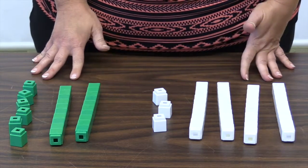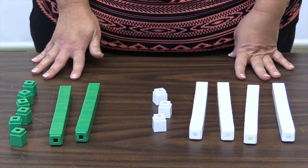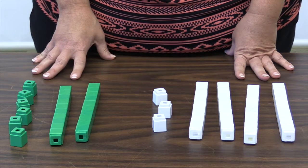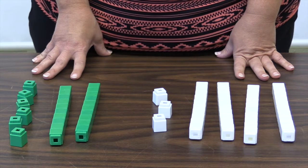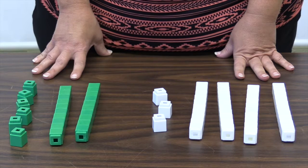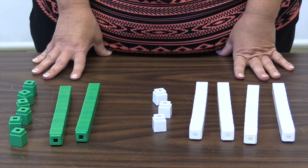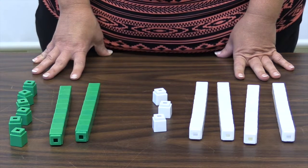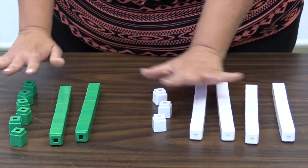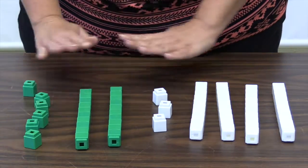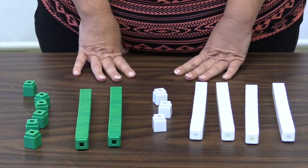Base ten blocks cannot be broken apart or put back together. The one cubes should always be separated and the tens should always be in sticks of tens. Additions should be presented within the context of a problem. For example, there are 43 crayons in the basket. Sarah put 26 more in the basket. How many are in the basket now?